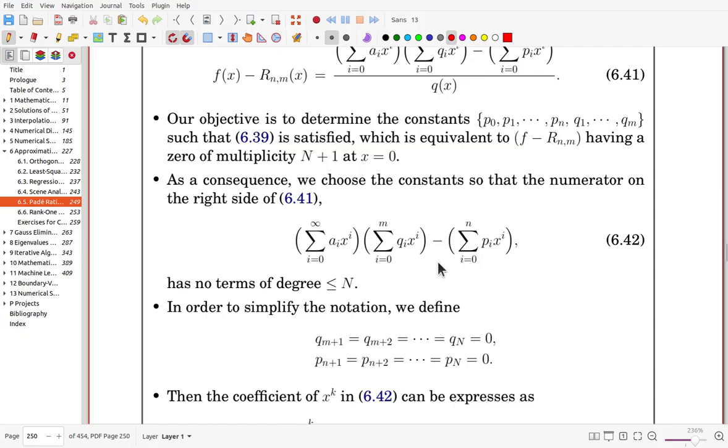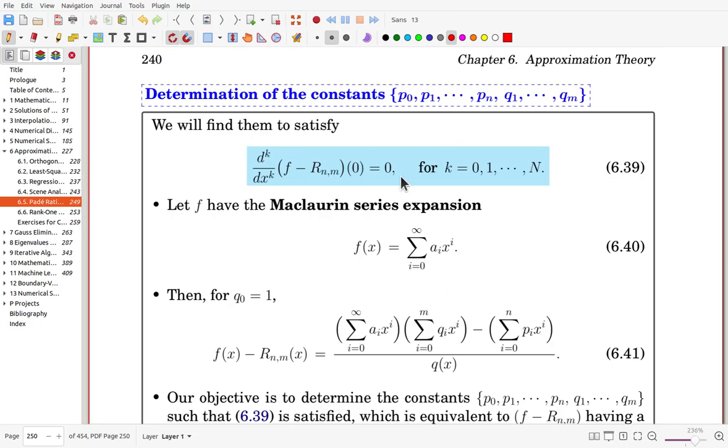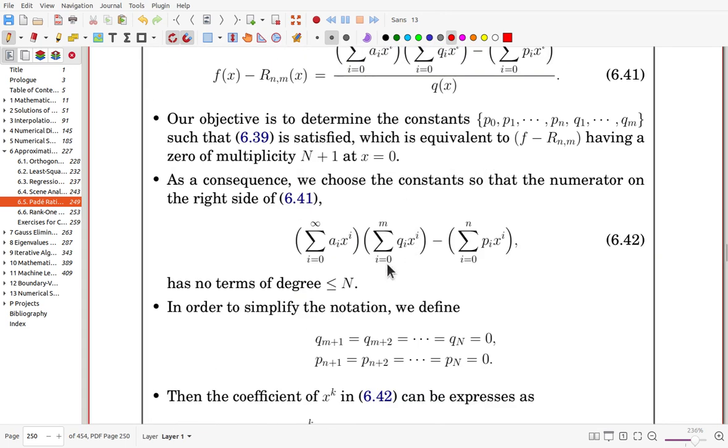And so that for this one, the numerator, we try to choose q and p values such that now it is 0 up to a degree capital N.